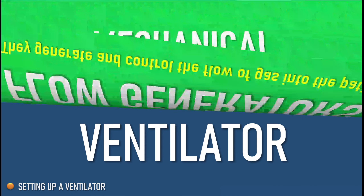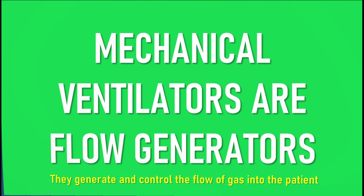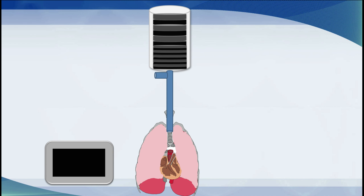The first point I want to make is that mechanical ventilators are flow generators. They generate and control the flow of gas into the patient. This is an example of some of the material we'll be covering. On the top is a ventilator, there's some tubing, there's lungs, and there's a control and measurement screen.